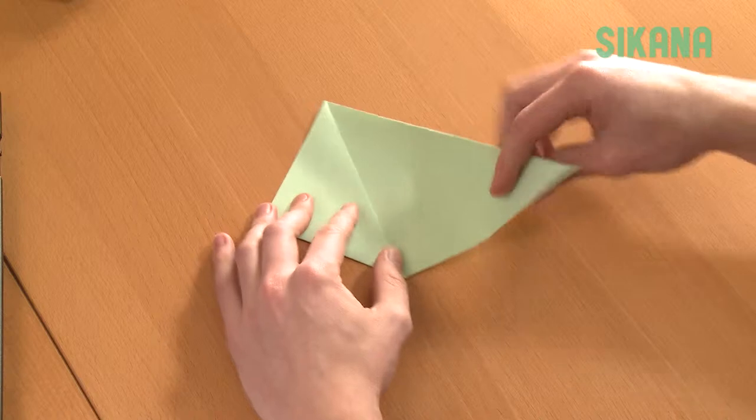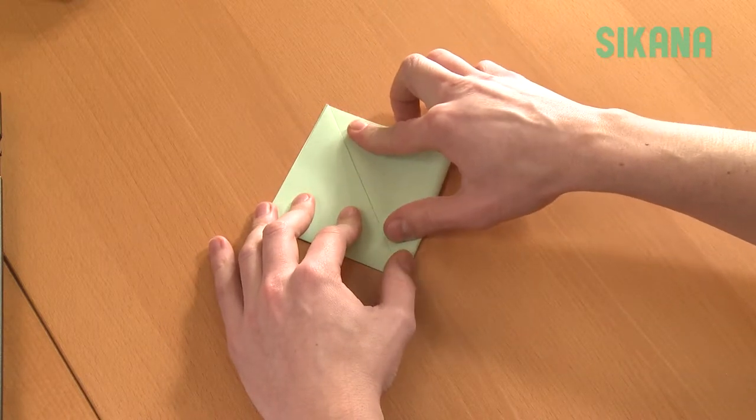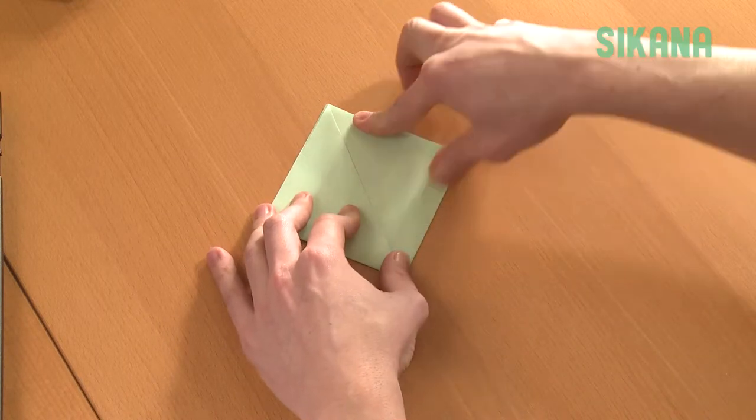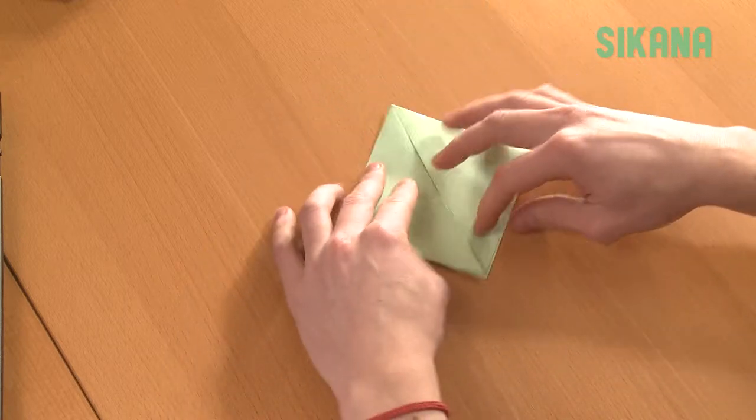Make the same fold with the other side. Turn the sheet so that the openings are facing downward.